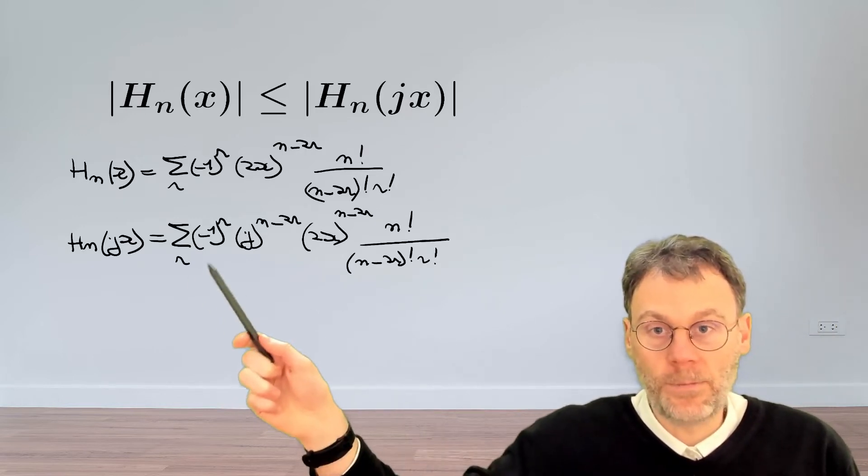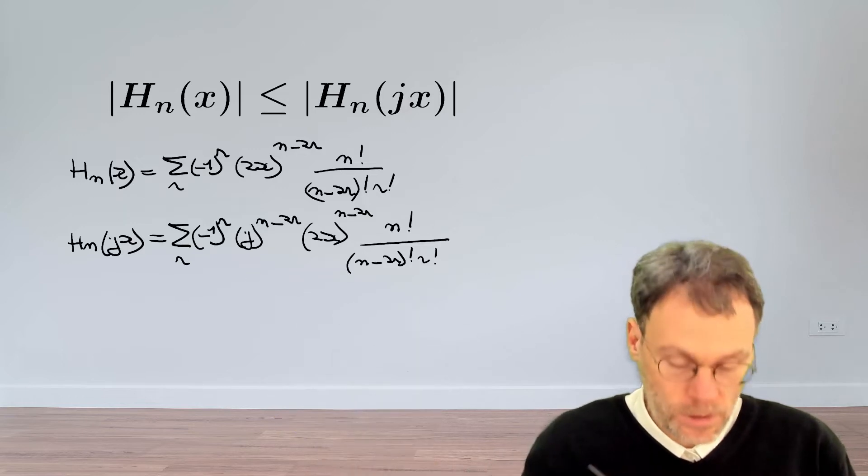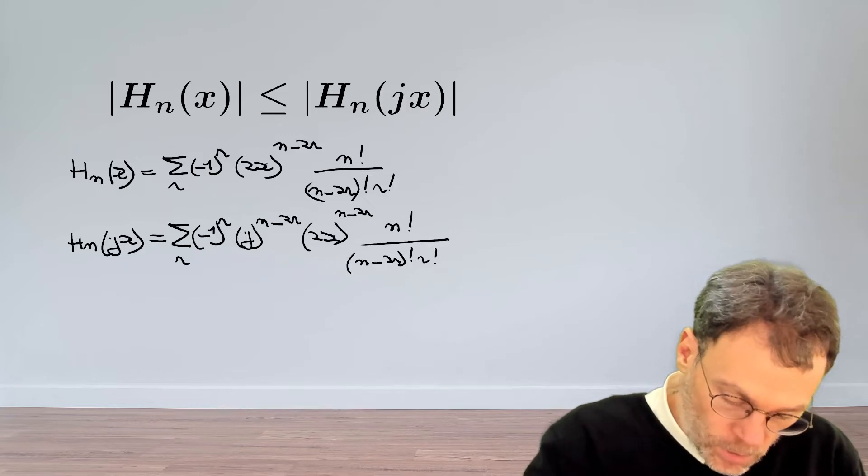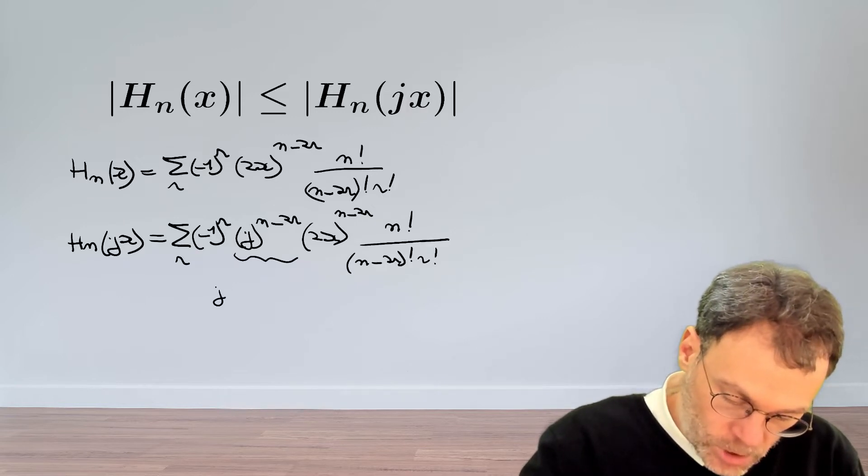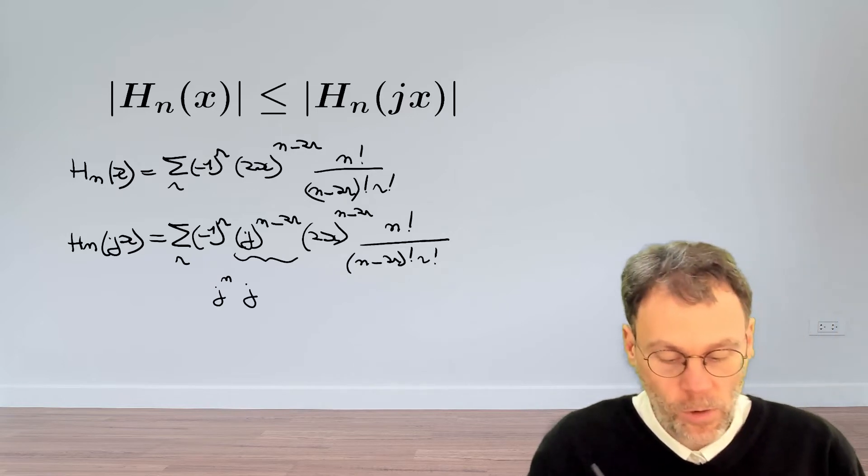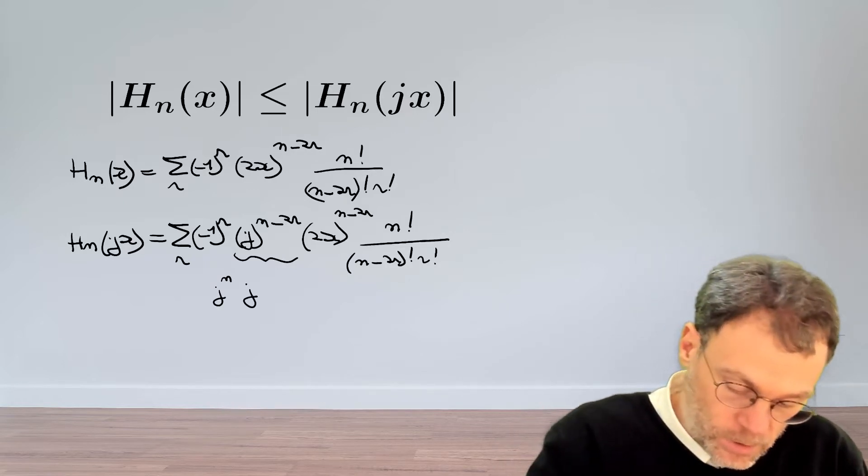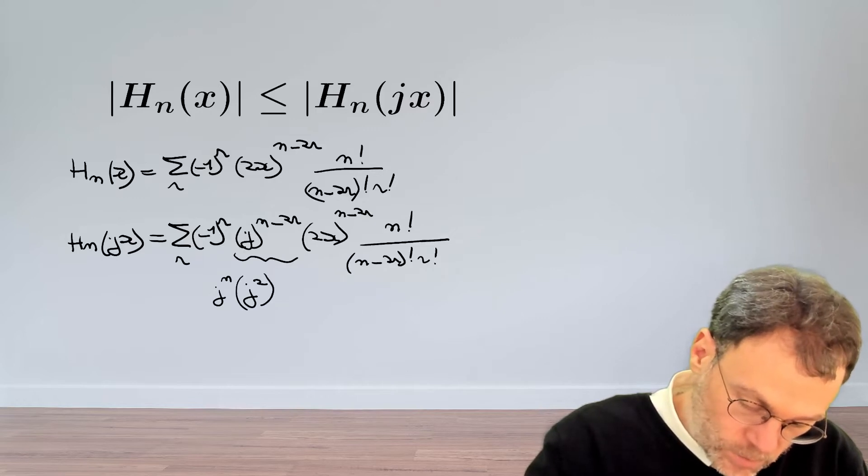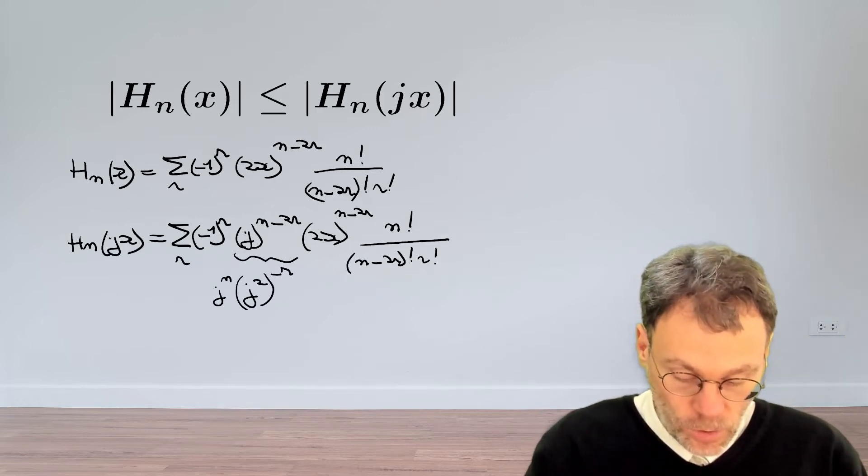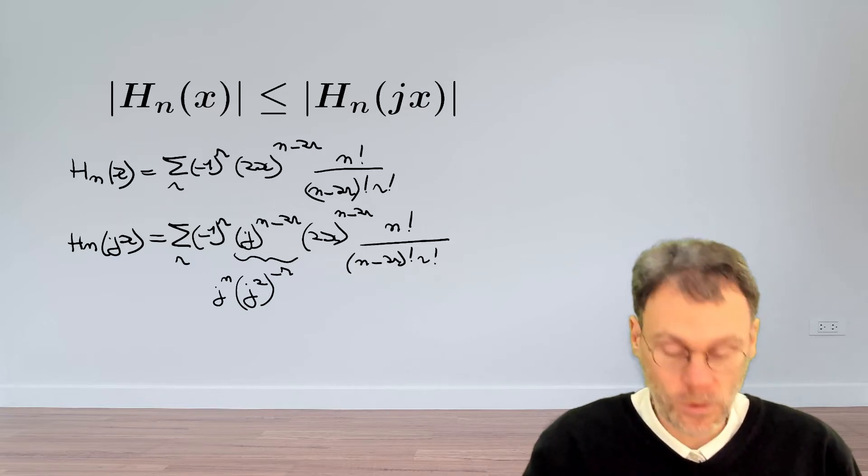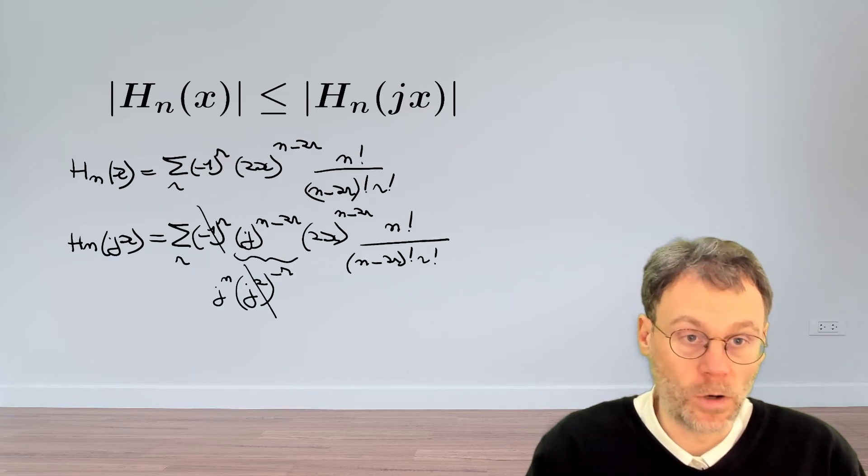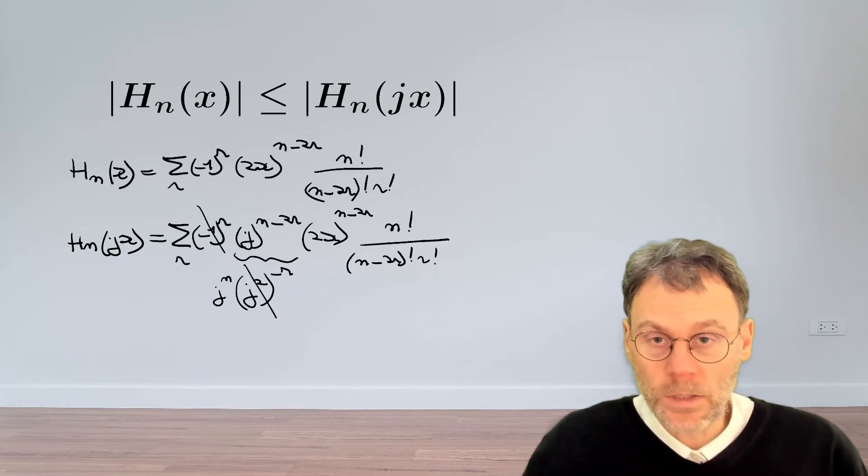Okay, let's simplify this j here, the power of j to n minus 2r. So obviously this is going to be j to the power of n times j to the power of minus 2r, so that you can write as j squared to the power of minus r, so that's also going to be minus 1 to the power of r, which will cancel with this minus 1 to the power of r. Cool, what's next?